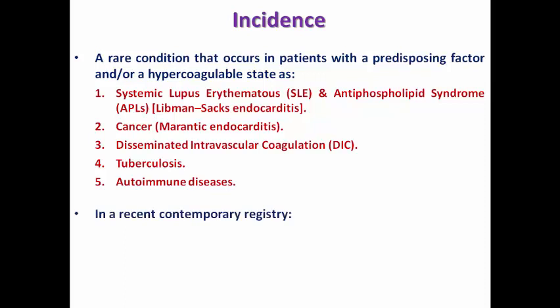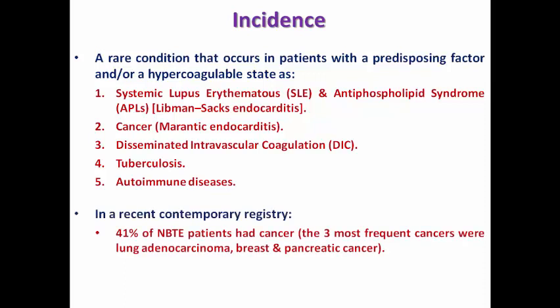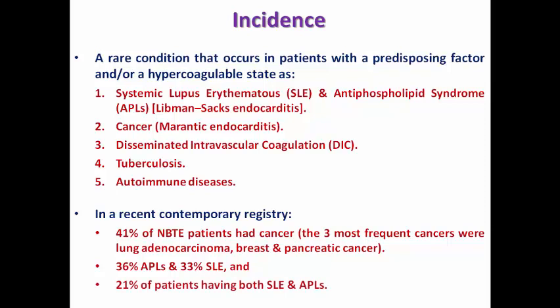In a recent registry, 41% of patients had cancer — the most common cause — with the three most frequent cancers being lung adenocarcinoma, breast cancer, and pancreatic cancer. 36% had primary antiphospholipid syndrome, 33% had systemic lupus, and 21% had both systemic lupus and secondary antiphospholipid syndrome.